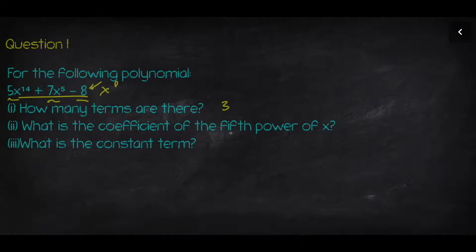So, what is the coefficient of the fifth power of x? So, here is the fifth power of x, this term, and that's why the coefficient is 7. What is the constant term? So, as I said, the constant term means it doesn't contain an x value at all. That's basically a number, but be careful that this term contains the sign before. Always the sign before relates to the coefficient. So, that's why it's negative 8, and that's the constant term. Alright, let's get into the next one.